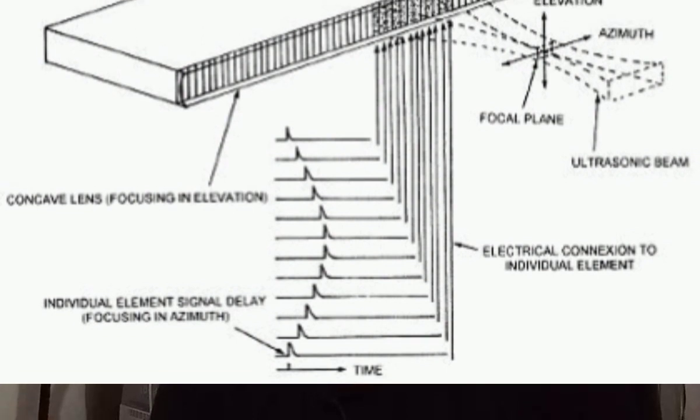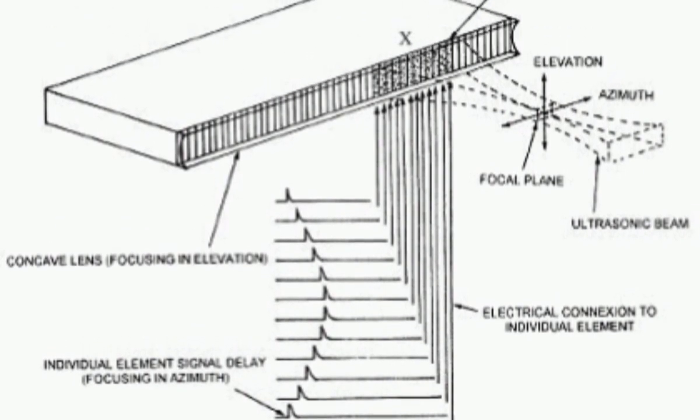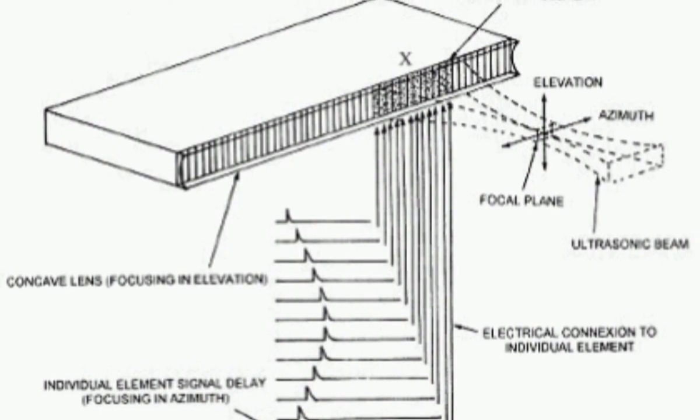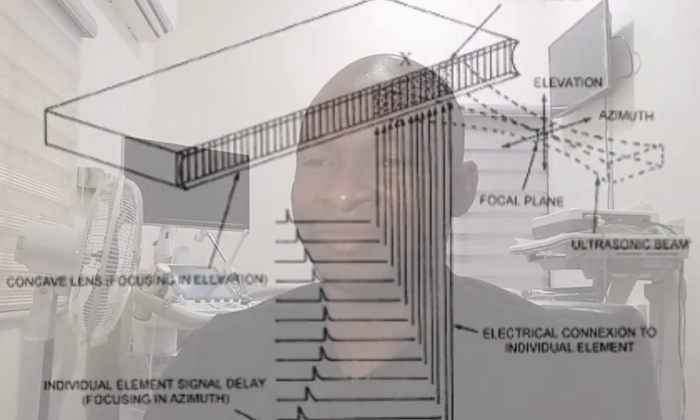Array transducers — almost all modern transducers are electronic arrays. An array is the collection of active elements or crystals within a single transducer assembly. Each active element is connected to its own electric circuitry and is isolated from its neighboring crystal, both electronically and acoustically. The active elements in the array can be fired individually or together to form the beam.